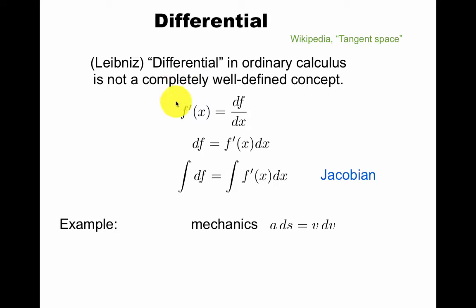So what's the problem we're trying to solve? Leibniz differential, we know already, is not really a well-defined concept. It's very useful. f' is df/dx. You multiply up dx, you can do integrals. This is a good rule to remember how integrals transform under a change of coordinates, as in the Jacobian.